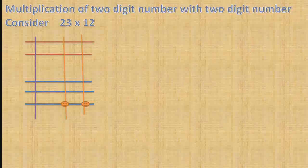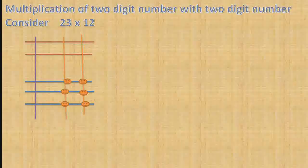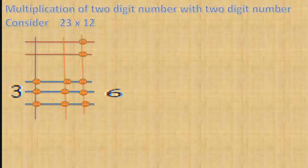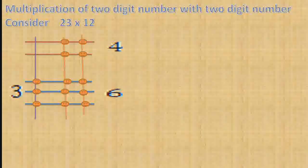Count the intersections in each region. The first region gives 6, write 6. The next region gives 3, write 3. The next gives 4, write 4.